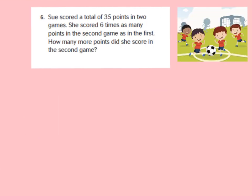Alright, let's jump down to number 6. Sue scored a total of 35 points in two games. She scored 6 times as many points in the second game as the first game. How many more points did she score in the second game? So we need to draw a comparison model to help us solve this comparison problem.